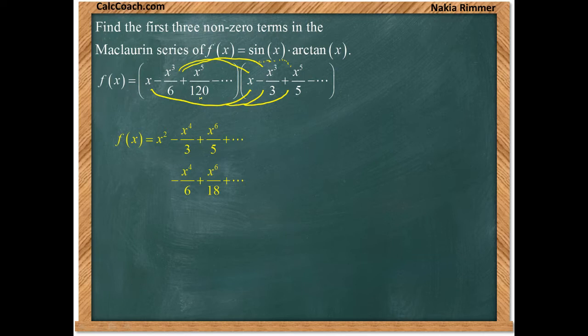When it comes time to multiply the x to the fifth over 120, we just need to multiply it by the x because that gives us our x to the sixth term. We have a positive one over 120 times a positive one, so we just get positive one over 120 x to the sixth. There's some other terms there, but we're going to add these vertically.